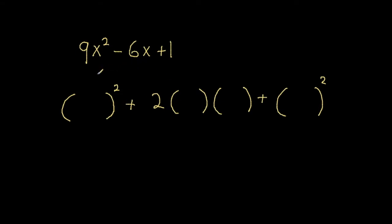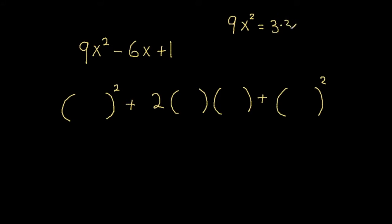Anyway, we ask ourselves the first question: are there two things that are being squared here? Usually those two things are the first term and the last term. So let's look at 9x squared — what do we square to get 9x squared? We might not be able to guess that immediately, so let's do some work. 9x squared can be broken down: the 9 can be broken down into 3 times 3, and x squared can be broken down into x times x.